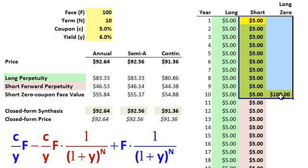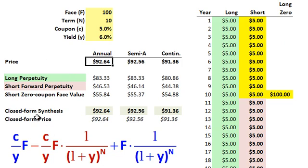So since that's necessarily equal to the bond, we now have a way to price this in a closed-form way. And so here one for each row, here's the long perpetuity. I've got the formula right here. Notice there's three terms.